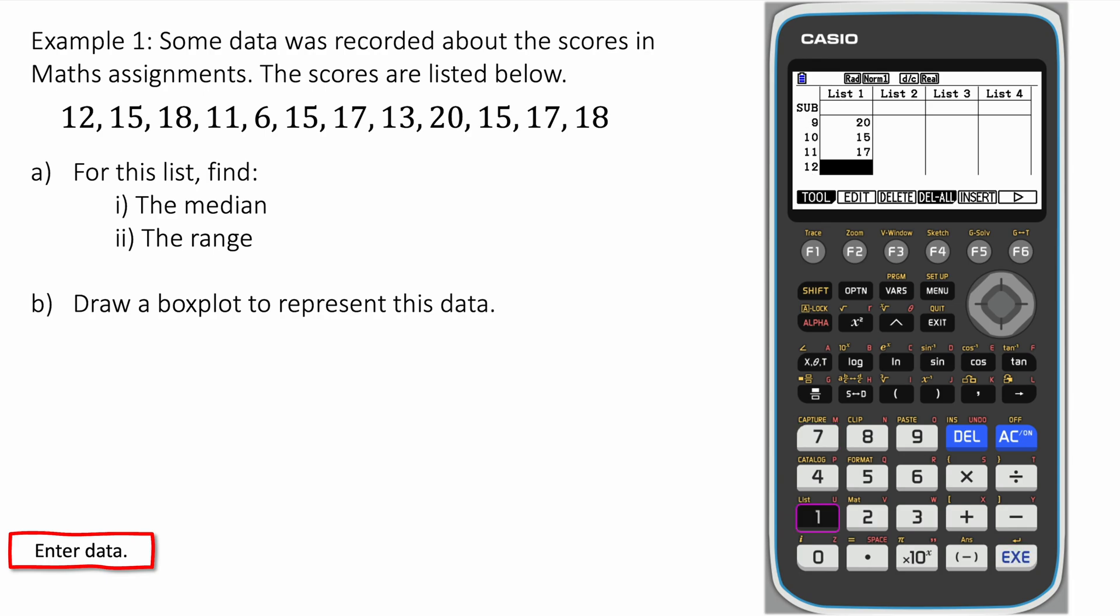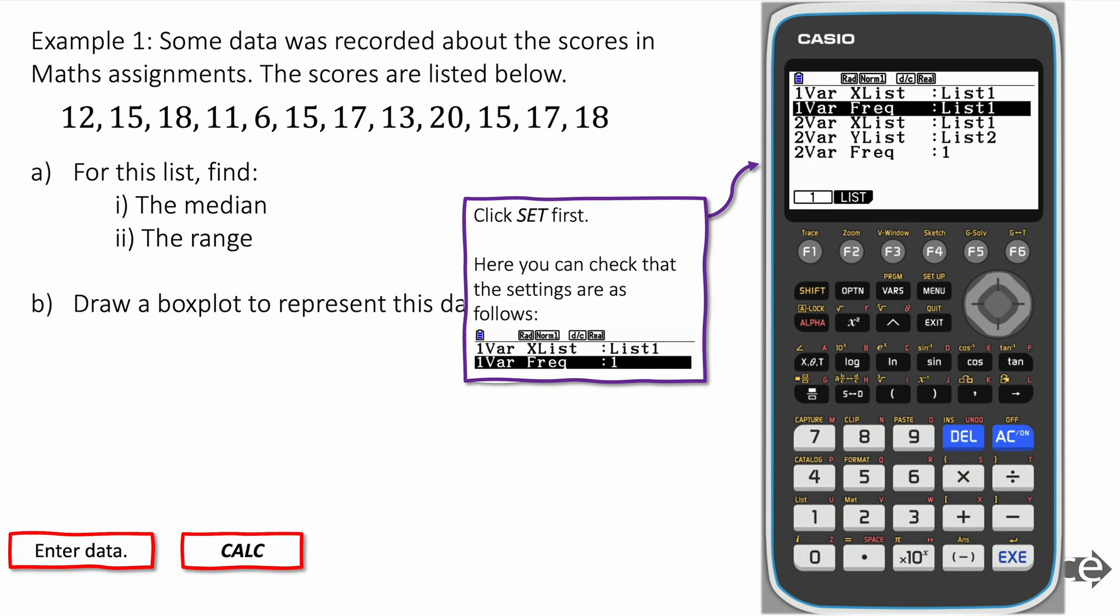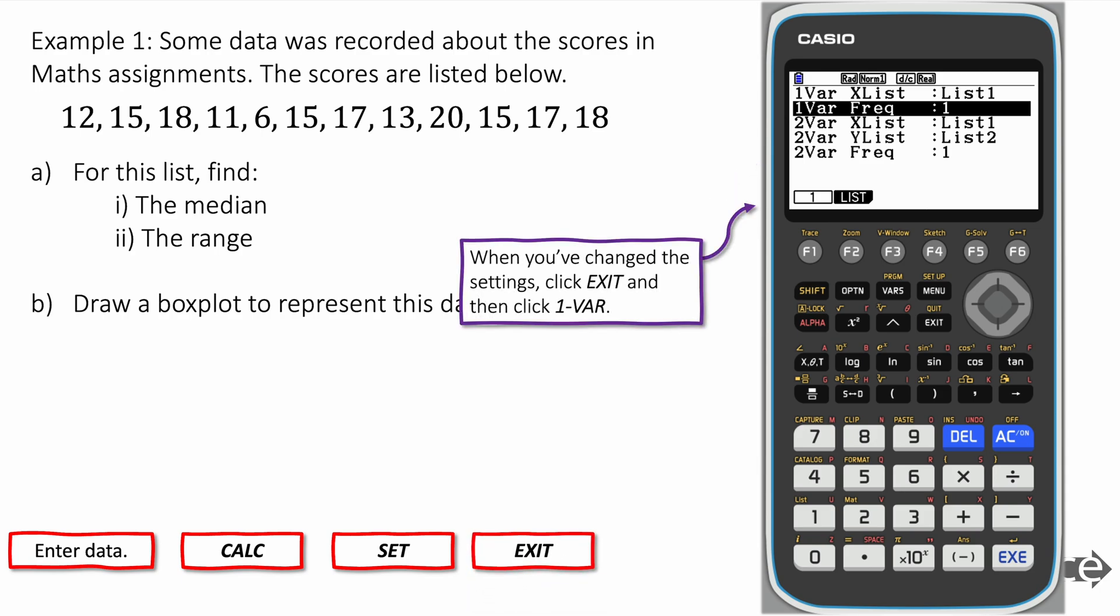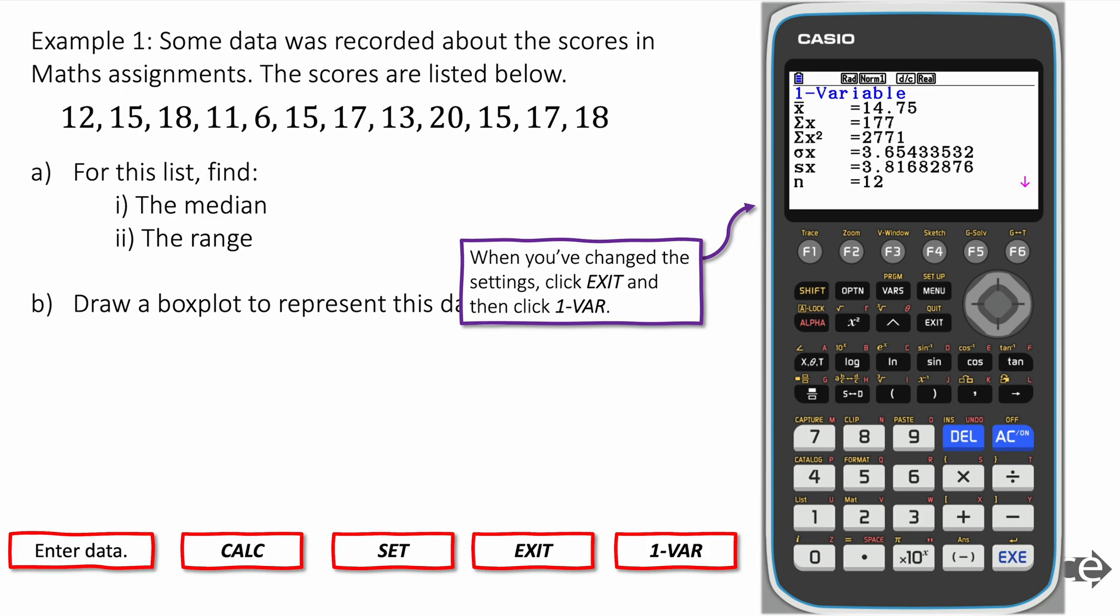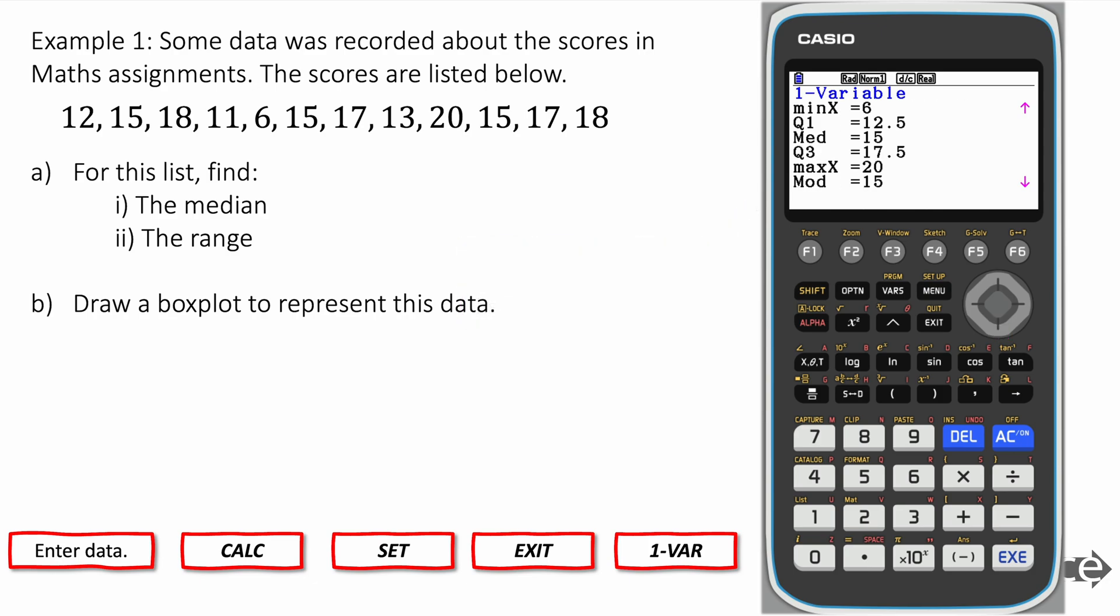Now when you've entered this we're going to go to Calc and we're going to change the settings. We're going to change the settings like this to make sure list 1, the frequency of list 1 is set to 1 because it's a list. And you can click exit and then one var and it gives you all the statistics on this data here. So we entered our data first, then we went to Calc, then we changed the settings. Once we sorted the settings, we set the list 1 frequency to be 1. We pressed exit and then one var because it's one variable statistics and it gives us all the statistics we could ever want like that.